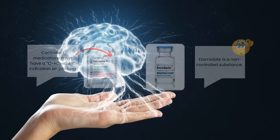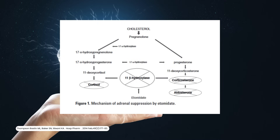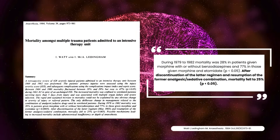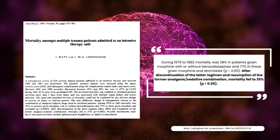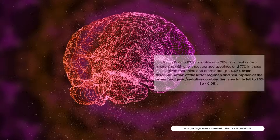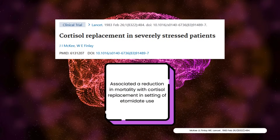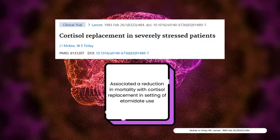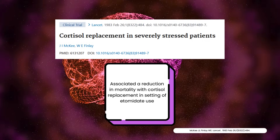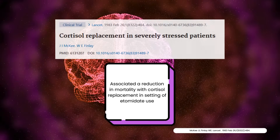Sounds like a great drug, right? The known concern is etomidate-induced adrenal insufficiency from 11-beta-hydroxylase inhibition. This enzyme is essential for corticosteroid biosynthesis. A single dose can blunt adrenal function anywhere from 4 to 24 hours, and up to 72 hours in some cases. Etomidate was the magical induction agent up until the mid-1980s, when reports indicated a possible increased risk of mortality. McKee and Finlay conducted a trial in 1983 showing that cortisol replacement therapy reduced mortality in the setting of etomidate use. The effects on adrenal suppression make it unsuitable as a continuous infusion. Etomidate has seen increased use over the past several years, given the true risk after a single dose remains unclear.